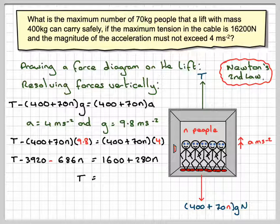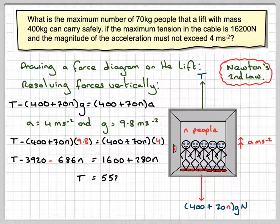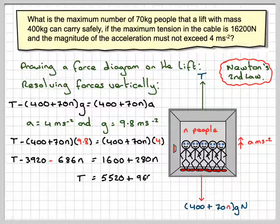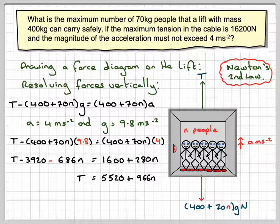So T will be equal to, so combining these two, that makes 5,520 and combining these two plus 966N.